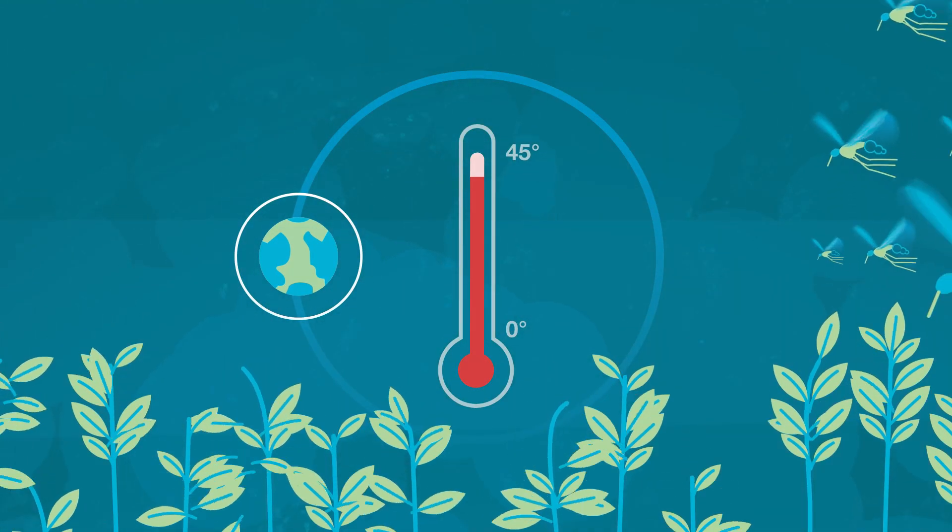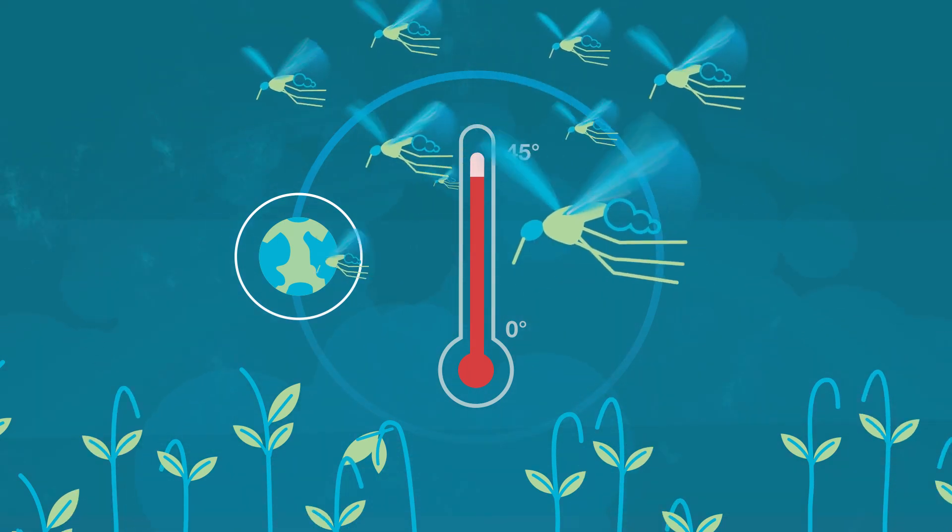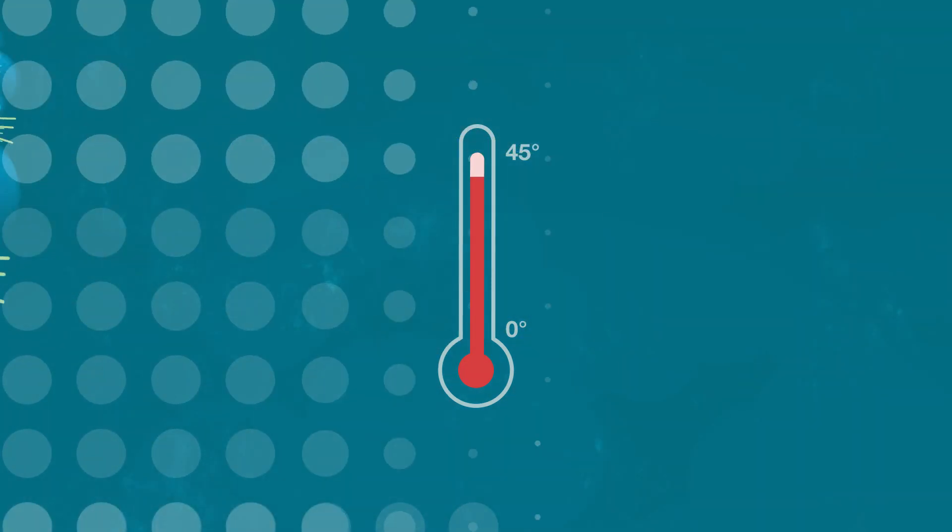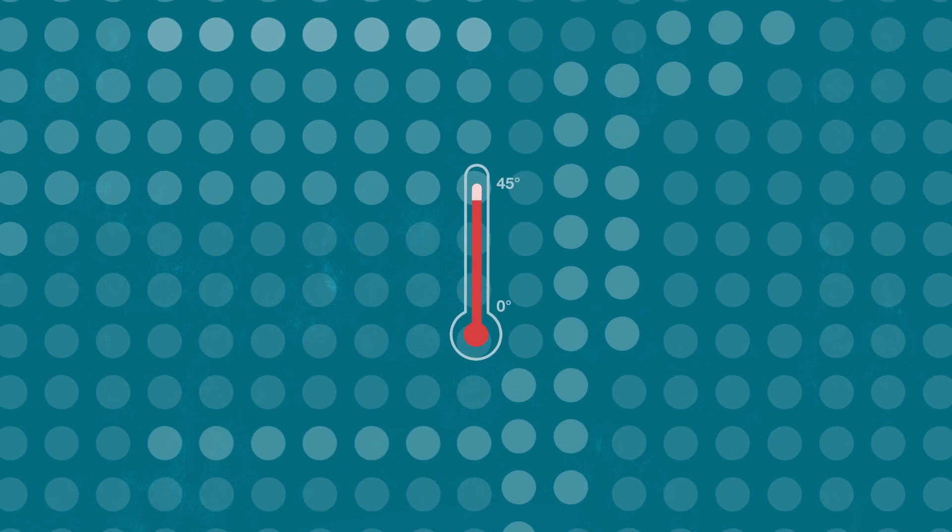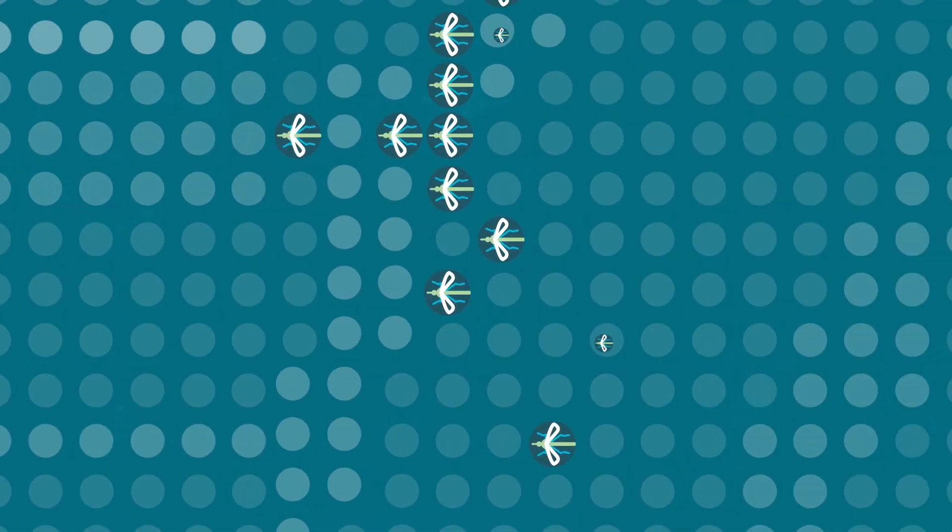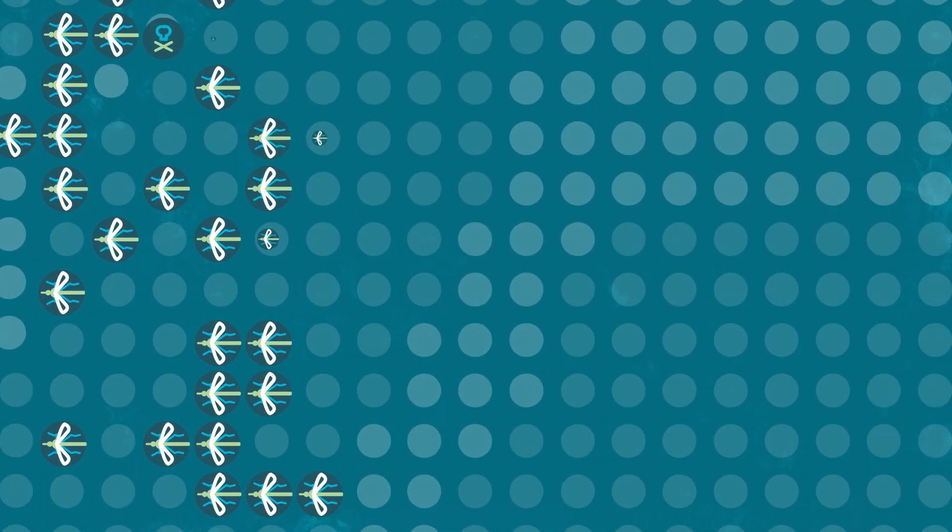This leads to changes in the distribution of crop and other pests. Many pests are vectors for diseases such as malaria. This means the geographical range of disease will likely increase with rising global temperatures.